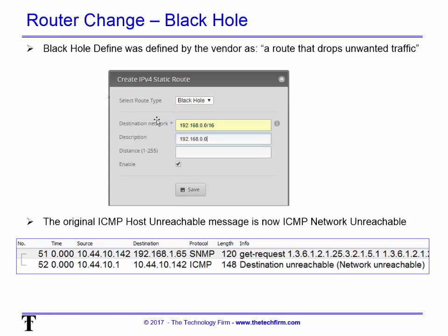We went into the router and found a setting called 'black hole,' which the vendor defined as a route that drops unwanted traffic. We set the destination network to 192.168.0.0 with a 16-bit mask and added a description. The host unreachable from the ISP went away, but now we could see the router at 10.44.10.1 sending destination unreachable — network unreachable messages.